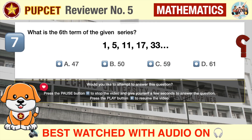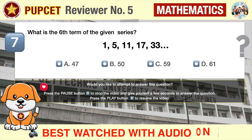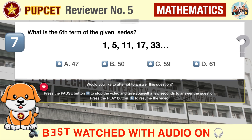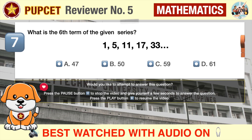Question number seven: what is the sixth term of the given series 1, 5, 11, 17, 33? A) 47, B) 50, C) 59, D) 61.